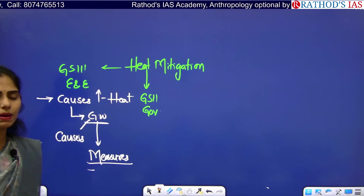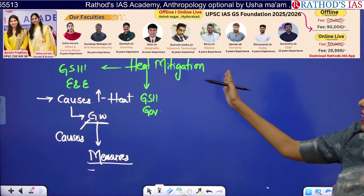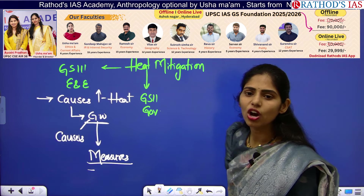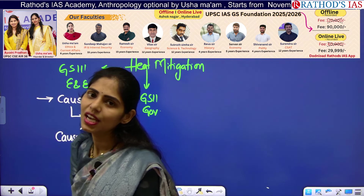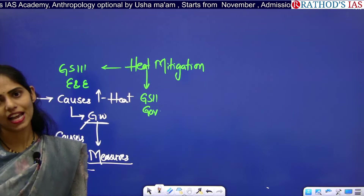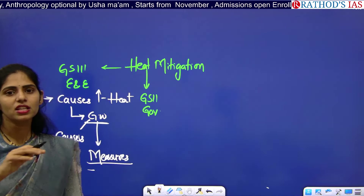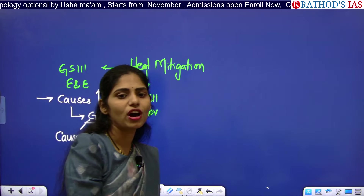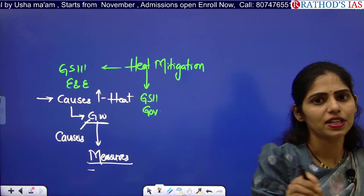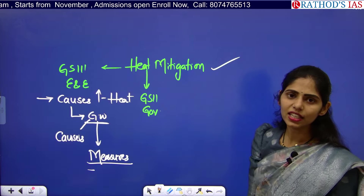In GS Paper 4 Ethics, there was a case study regarding increasing heat causing groundwater depletion and a conflict between farmers and industrial owners. The government imposes more restrictions on farmers than on industries. As a district collector, what steps would you take? There is a high chance of getting a case study regarding heat mitigation.